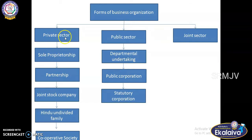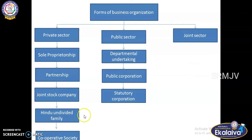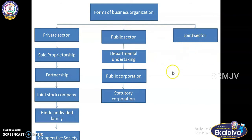Under private sector you have sole proprietorship, partnership, joint stock company, Hindu undivided family, and cooperative society. Under public sector you have departmental undertaking, public corporation, statutory corporation, and joint sector.